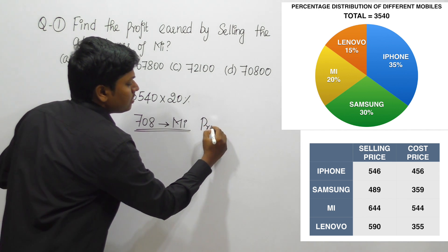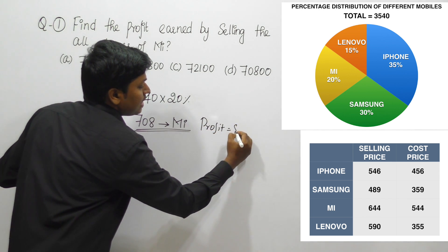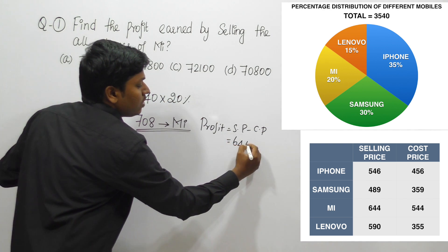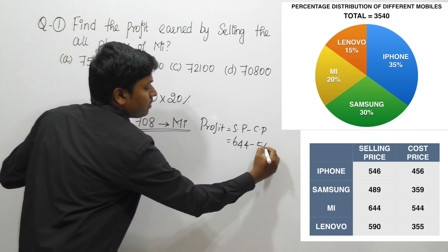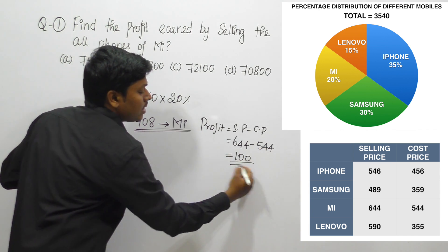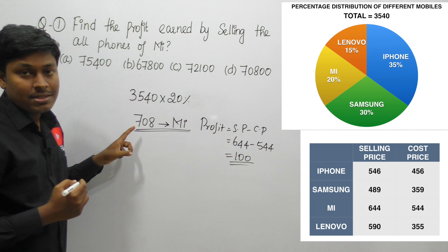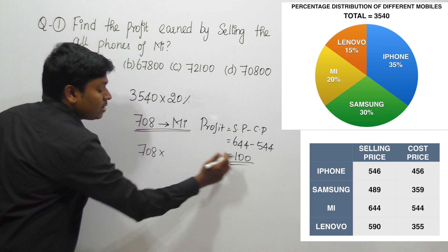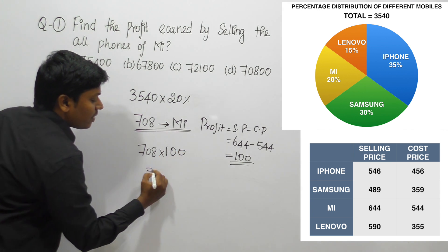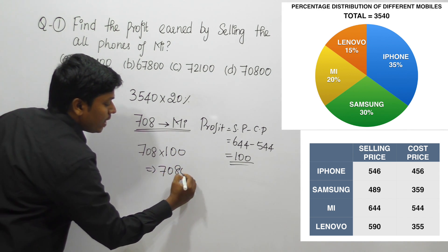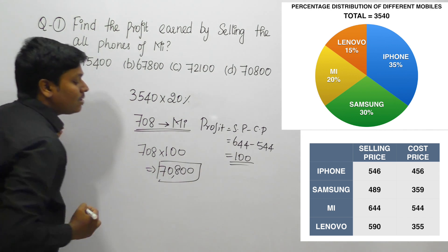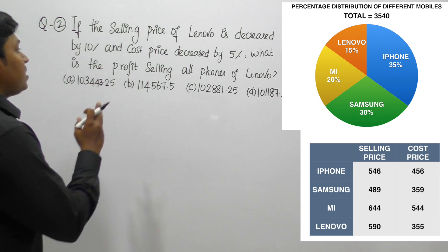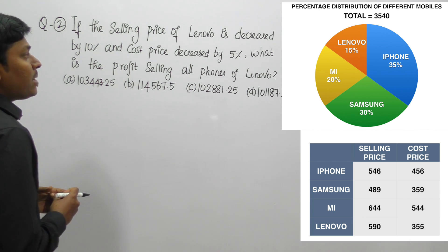Profit equals selling price minus cost price. The selling price of Mi is 644 and the cost price is 544, so the profit per phone is 100. We have 708 Mi mobiles, so the total profit earned by selling all Mi mobiles is 708 × 100 = 70,800.